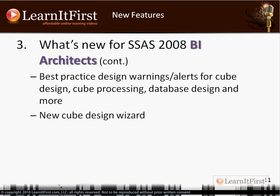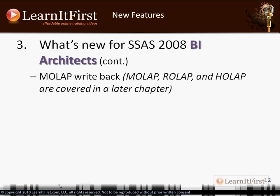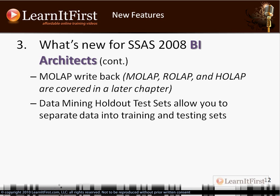There's a new cube design wizard and a new dimension design wizard — none of these are massive changes, just new screens and wizards. You can now write back to your cube in MOLAP. We'll discuss MOLAP (multi-dimensional OLAP), ROLAP (relational OLAP), and HOLAP (hybrid OLAP) later. For data mining, there's a holdout test set feature, which lets you keep your training data and test data for data mining as separate things.